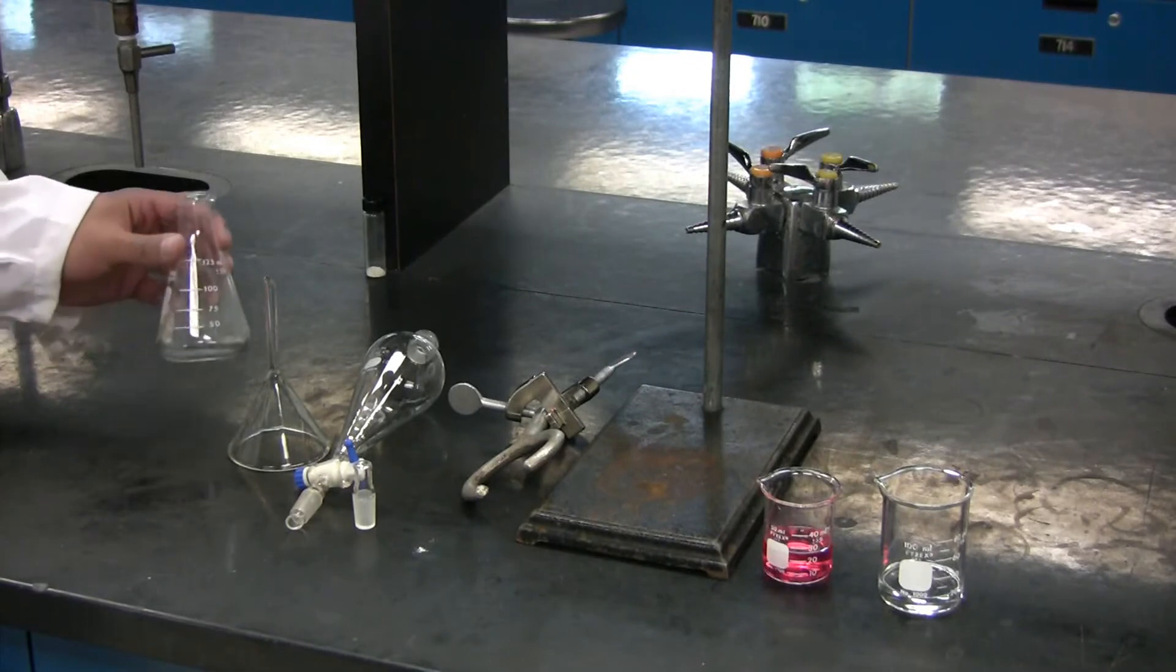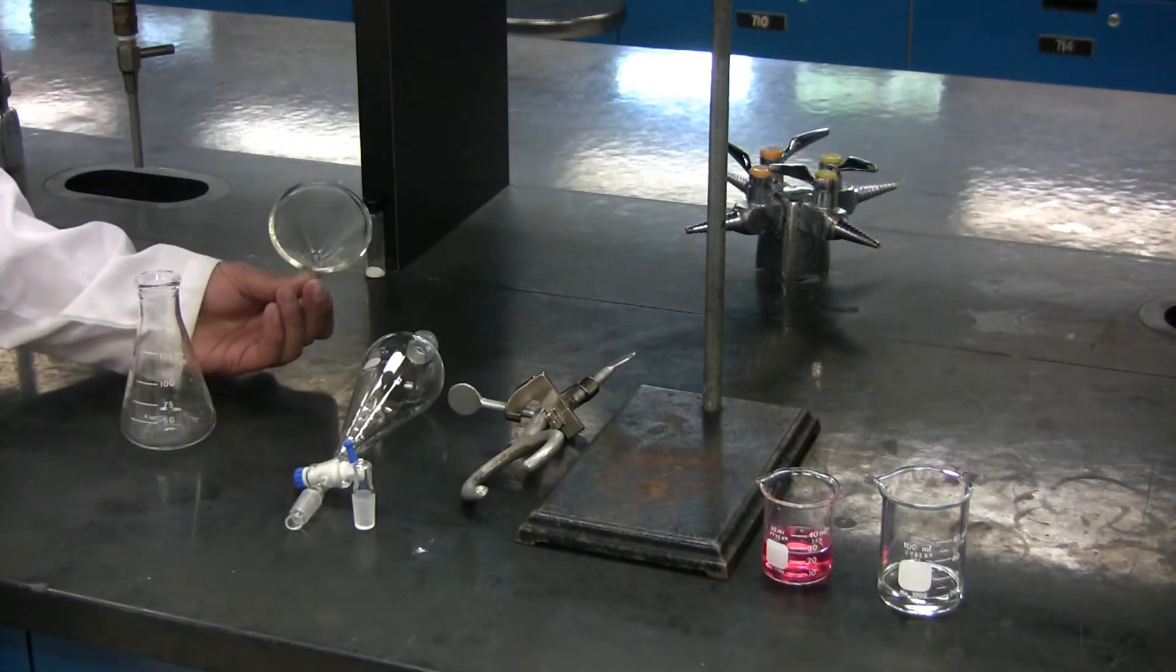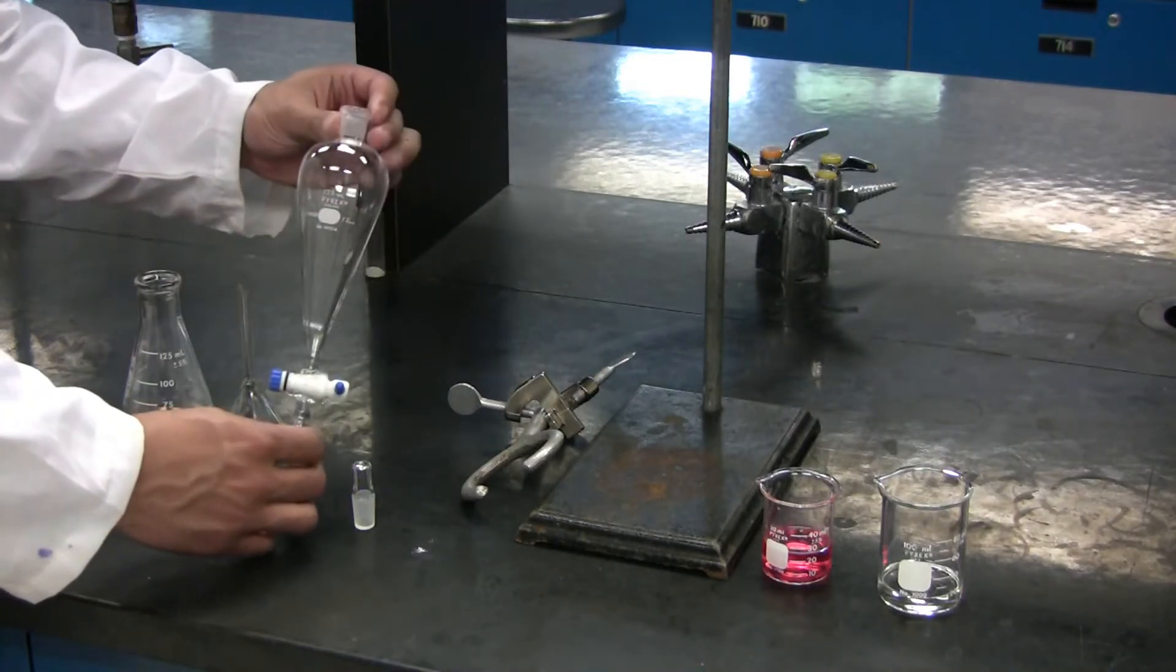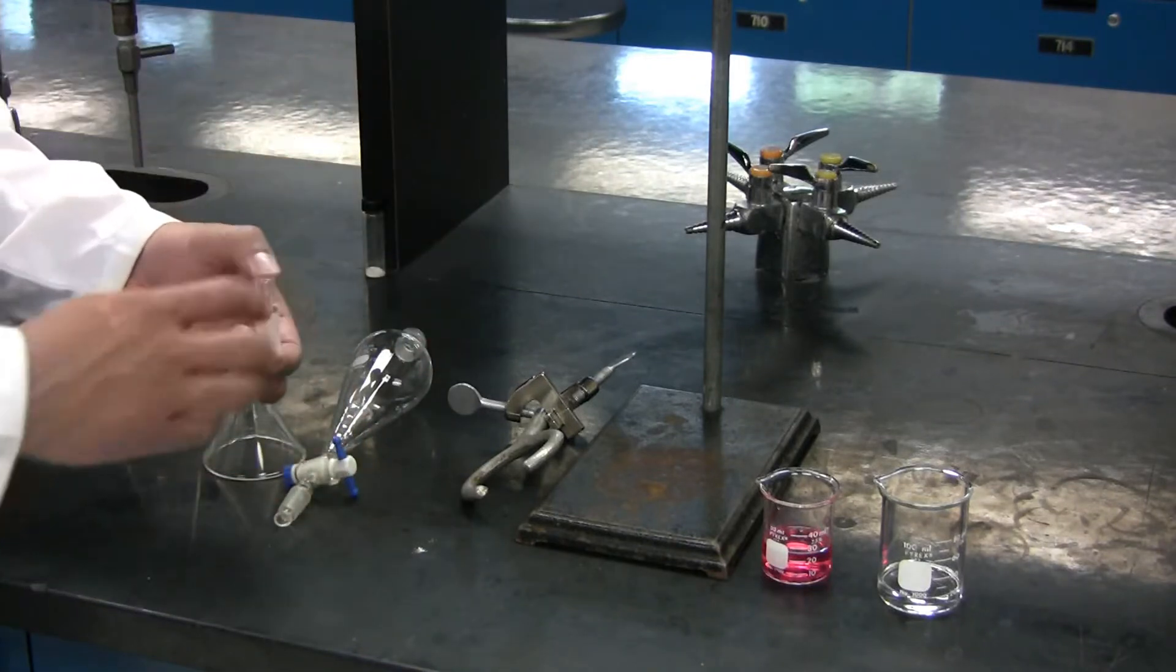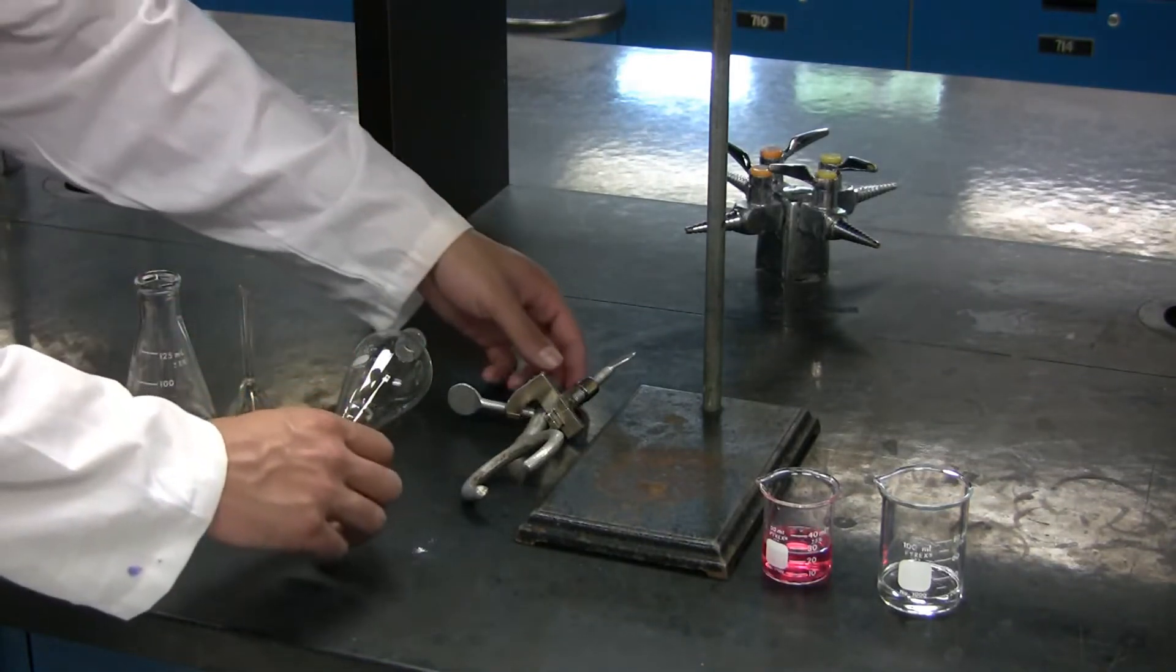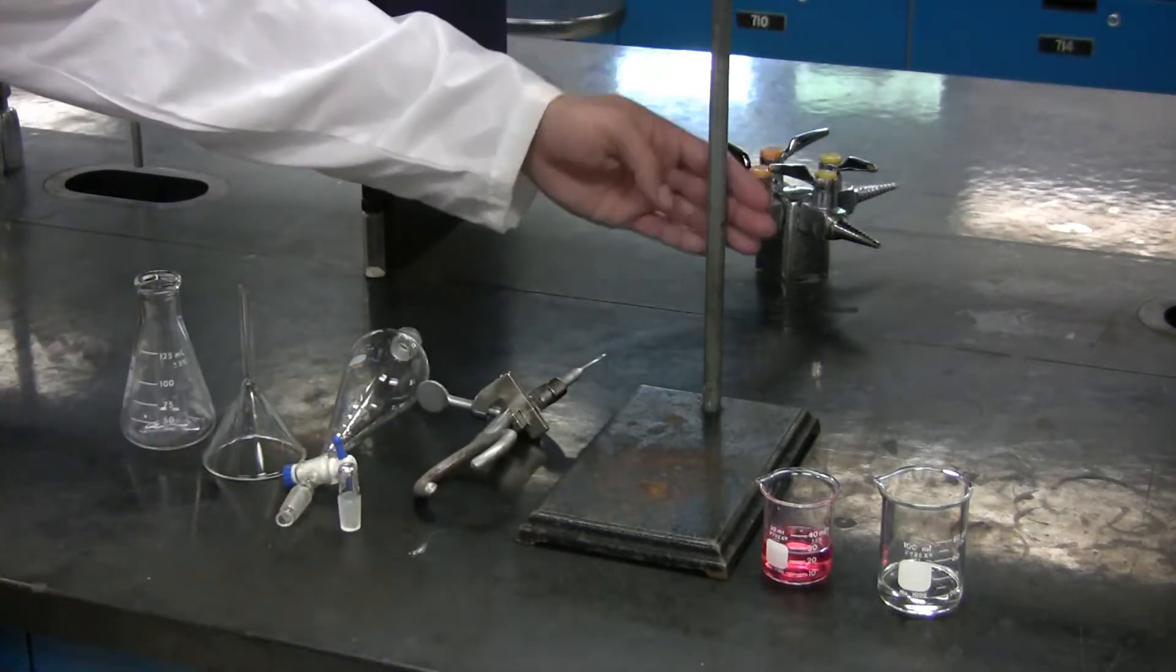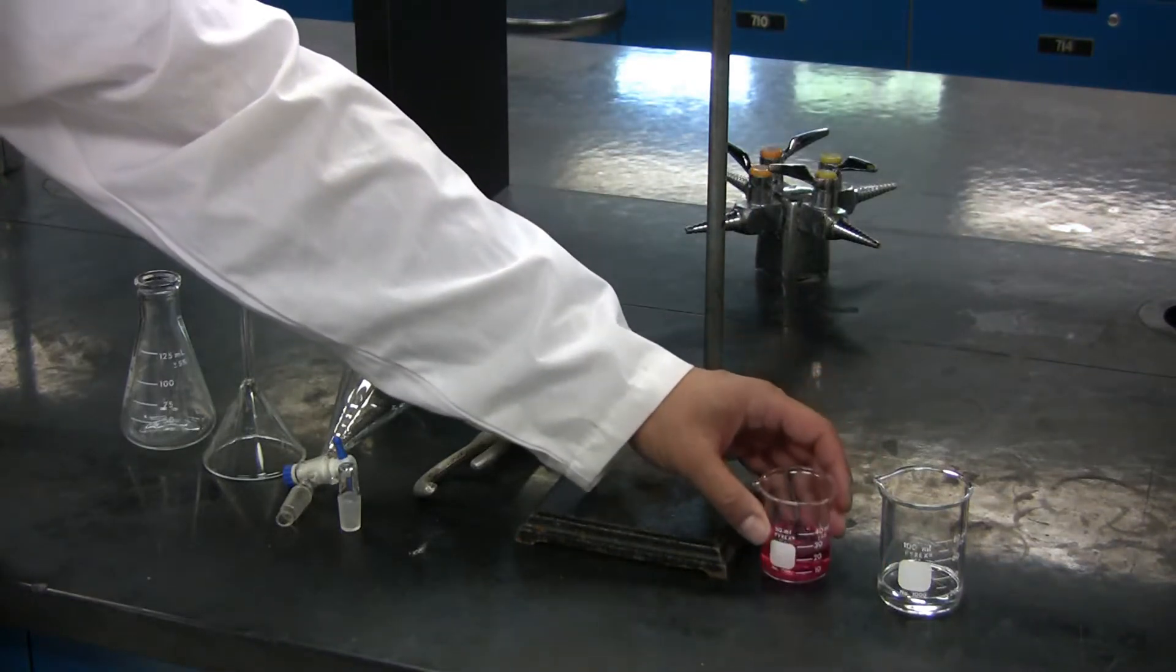You will require an Erlenmeyer flask, a glass funnel, a separatory funnel, a glass cap for the separatory funnel, a ring clamp, a retort stand, and your solution and solvent.